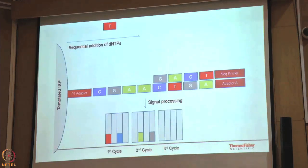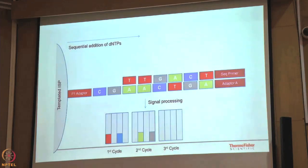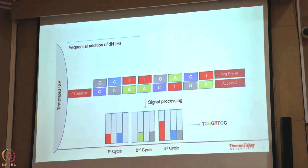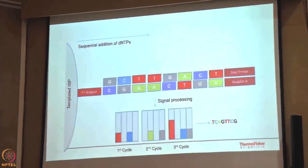If there are 2 A's and a T is flowing in, the signal will be double, and that is how the system knows there were 2 A's. If there had been 3 A's, the signal would be exponential. Based on these signals, you finally get a sequence from each particular well out of those millions of wells. After a 2.5-hour run, you have 80 or 100 million such sequences that need to be analyzed.